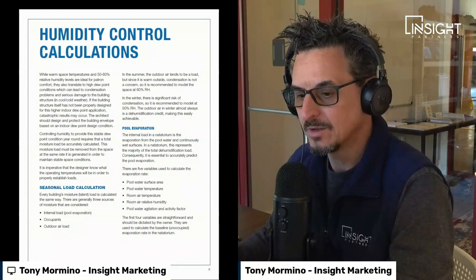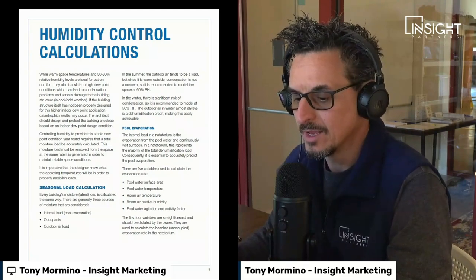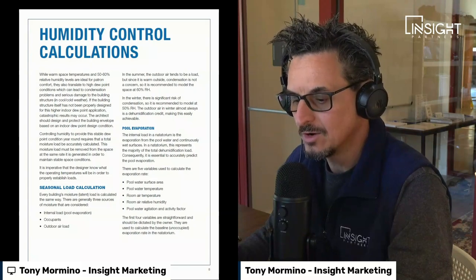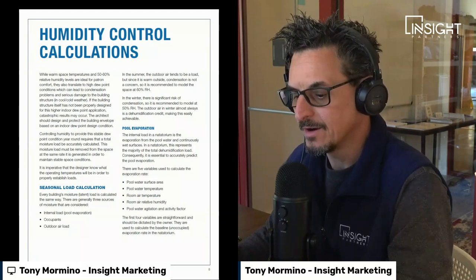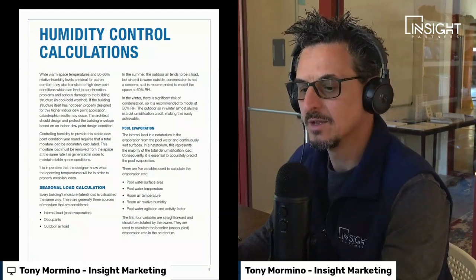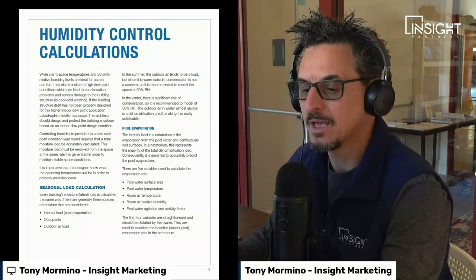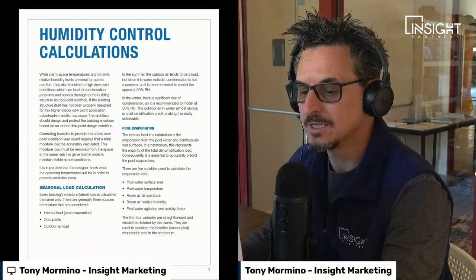Moving on to pool evaporation. The internal load of a natatorium is the evaporation from the pool water and continuously wet surfaces — this represents the majority of the total dehumidification load, so it is essential to accurately predict pool evaporation. There are five variables used to calculate the pool evaporation rate: one, pool water surface area; two, pool water temperature; three, room air temperature; four, room air relative humidity; and five, pool water agitation and activity factor. The first four variables are straightforward and should be dictated by the owner.